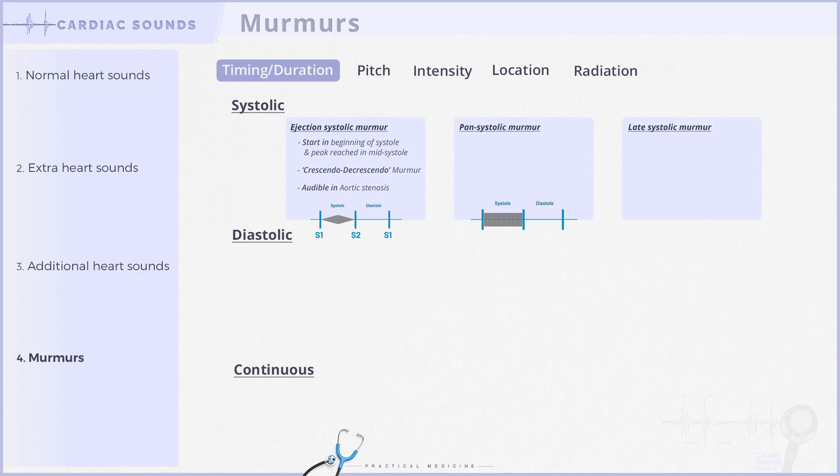Pan-systolic murmurs span the entire systole with a constant intensity. They are audible in conditions like mitral regurgitation, tricuspid regurgitation, and ventricular septal defect.